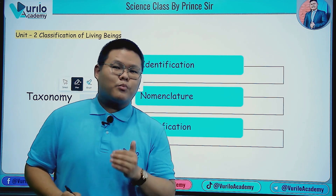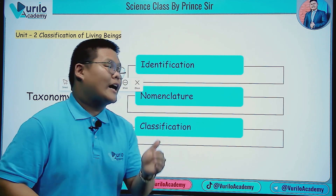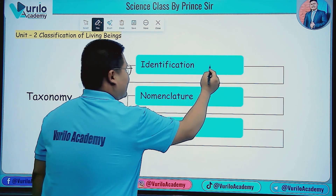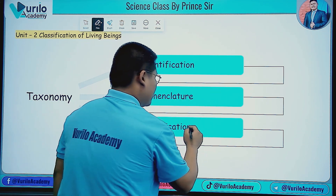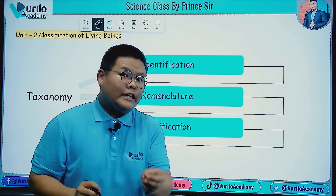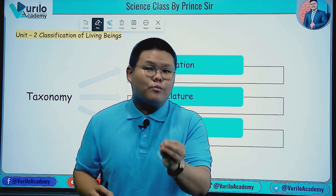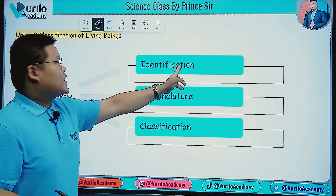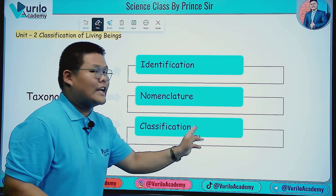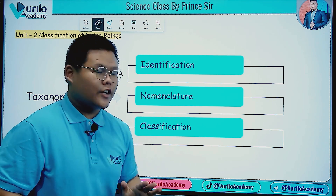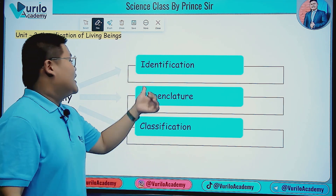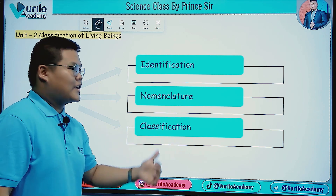Taxonomy is the branch of biological science that deals with the study of identification, nomenclature, and classification of any living organism. Remember: taxonomy is the branch of biological science in which the organism's identification, nomenclature, and classification are studied.